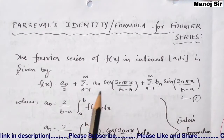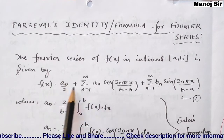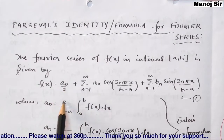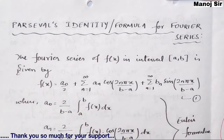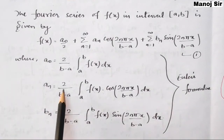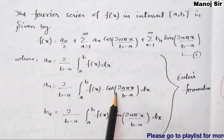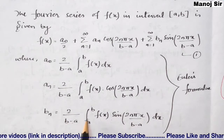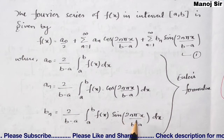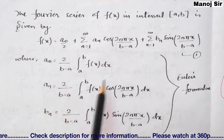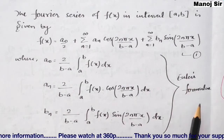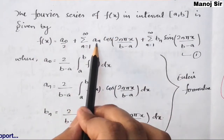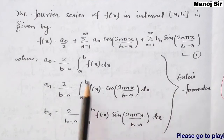We need to find the values of the constants a₀, aₙ, and bₙ. The formula for a₀ is 2/(b−a) × integral from a to b of f(x) dx. The formula for aₙ is 2/(b−a) × integral from a to b of f(x)·cos(2nπx/(b−a)) dx. The formula for bₙ is 2/(b−a) × integral from a to b of f(x)·sin(2nπx/(b−a)) dx. These are Euler's formulas.